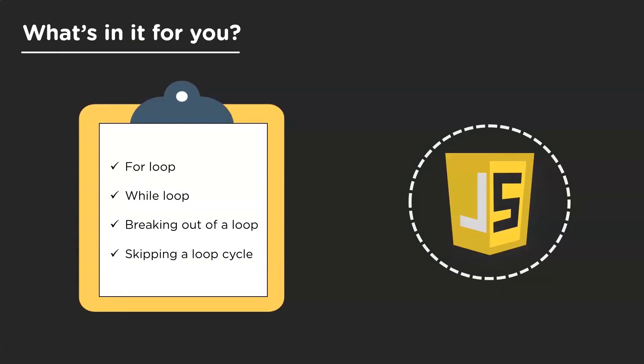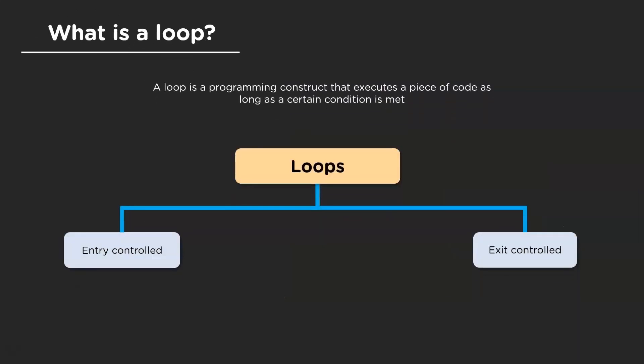Before jumping into the for loop, let's first understand what exactly a loop is. A loop is basically a programming construct that executes a piece of code as long as a certain condition is met. And there are two different types of loops.